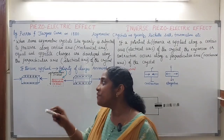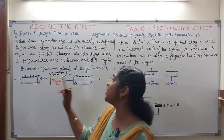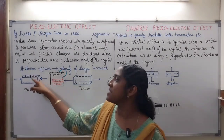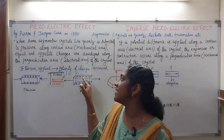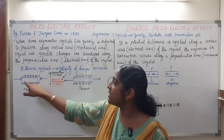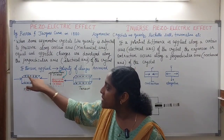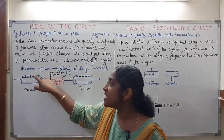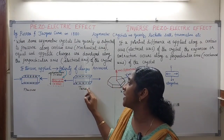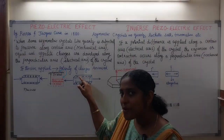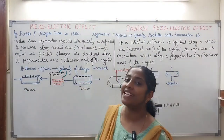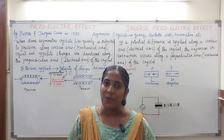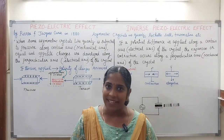Now if we change this pressure into tension, the polarity of the charges developed is reversed. Here on the top surface we are getting positive charges. When this pressure is changing to tension, instead of positive charges on that face, we are getting the negative charge. This effect is known as piezoelectric effect.